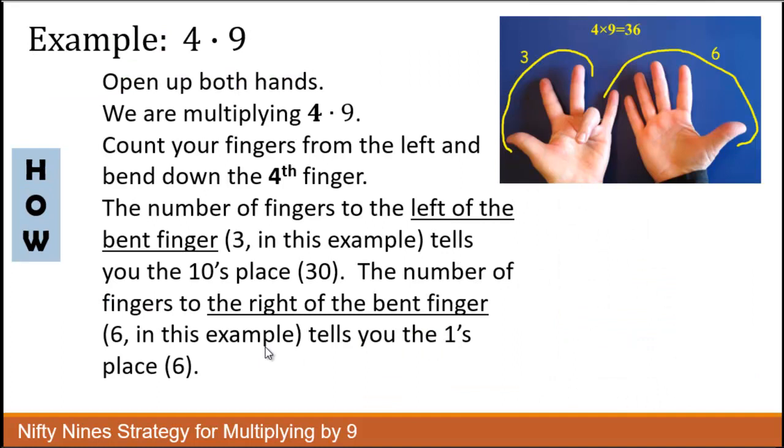So here's how it is and it's an easy strategy. Let's say we're multiplying 4 times 9. Count the number of fingers from the left, 1, 2, 3, 4, and you fold down that finger. Since we're multiplying by 4, you fold down the fourth finger.